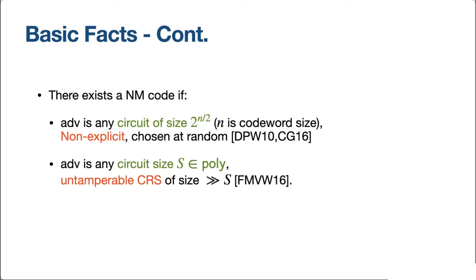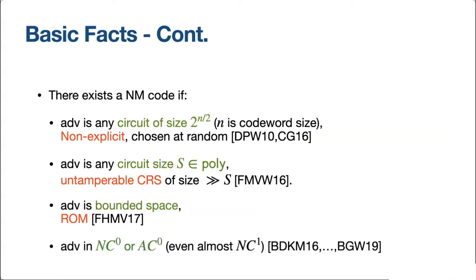There are also explicit constructions in models with something like a random oracle model, and when assuming the adversary has bounded space. More recent work focused on constructing non-malleable codes against complexity classes like AC0 and NC0. The most up-to-date results achieve security almost against NC1, specifically log-over-log-log depth circuits. So we have many constructions under many assumptions — some with trusted setup, some without.